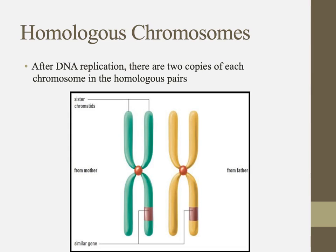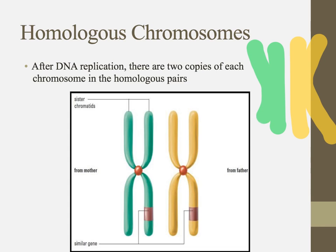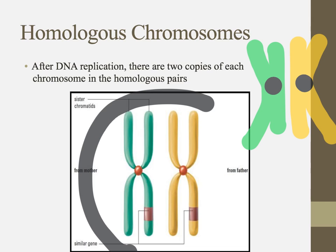What I just showed you was a homologous pair not in replication. Homologous pairs are one from the dad and one from the mom. But at some point we're going to undergo S phase in interphase and replicate that material. So the homologous pairs are then going to replicate — the mom is going to replicate and the dad is going to replicate. When I'm looking at homologous pairs, I'm usually going to be looking at some kind of duplicated situation — still homologous pairs, but in replicated form.